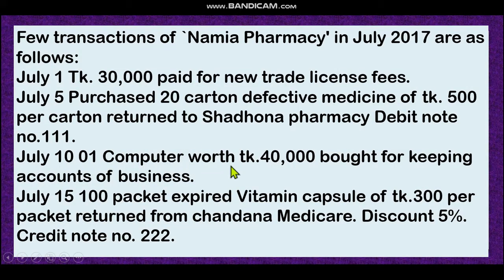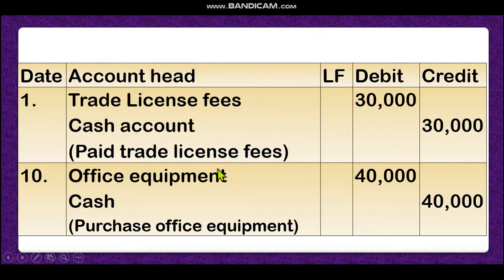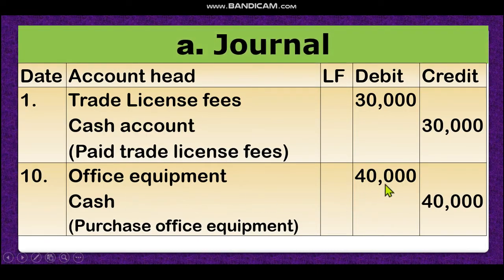January 10: a computer worth 40,000 taka bought for keeping accounts for business. If you purchase a computer, computer is an asset — it is called office equipment. So office equipment will increase, meaning asset account will be debited. On the other hand, your cash money will decrease, so cash account will be credited. Office equipment account debit and cash account credit. In last class we discussed in detail how to prepare debit and credit entries.